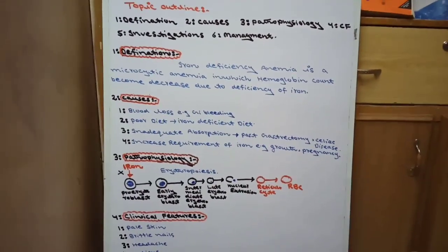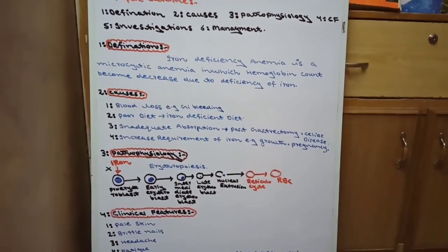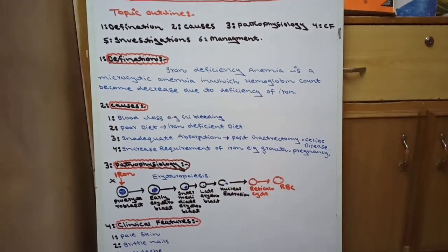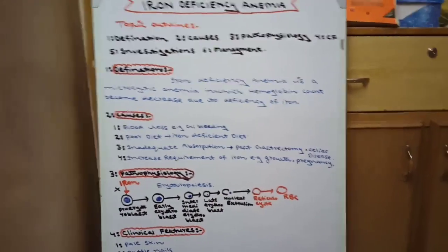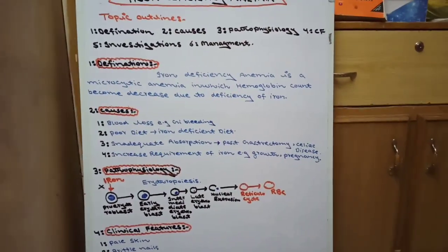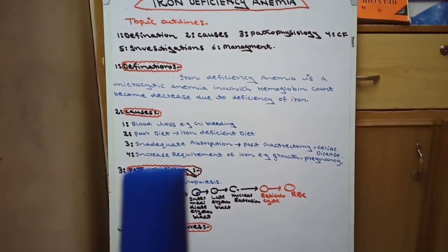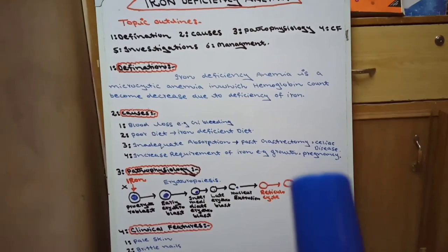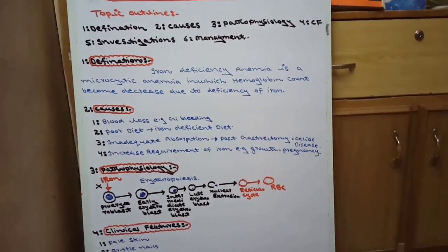Number two is poor diet — an iron-deficient diet. If we take an iron-deficient diet, the result will be iron deficiency anemia. Number three is inadequate absorption — for example, post-gastrectomy surgery of the GIT and celiac disease; in these two conditions there will be inadequate absorption of iron. Number four is increased requirement of iron, for example during growth and pregnancy, where iron is used in places other than RBC formation.